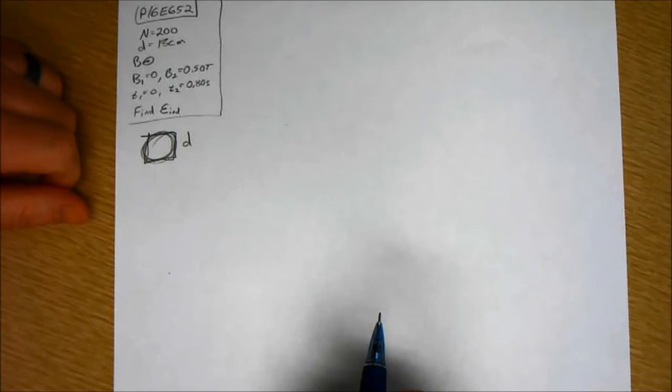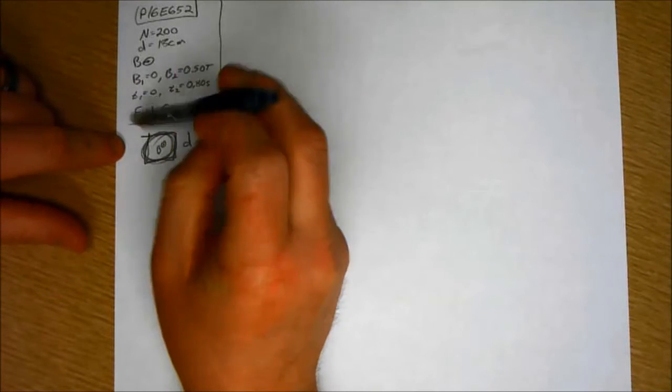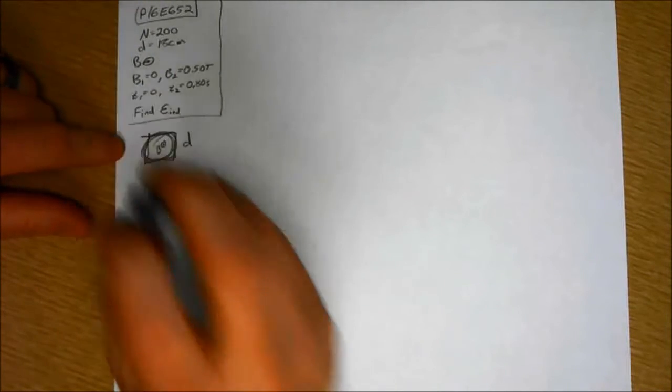And there's a uniform magnetic field directed perpendicular to the plane of the coil. It doesn't say which direction, but it doesn't matter. So we just say B is perpendicular, so like B is outside of the plane.